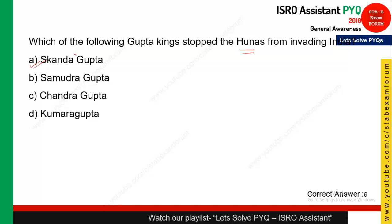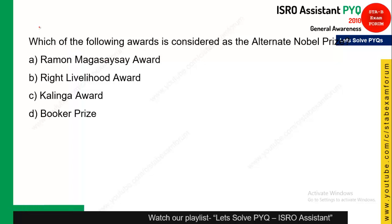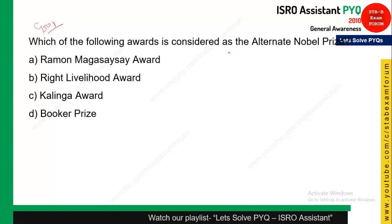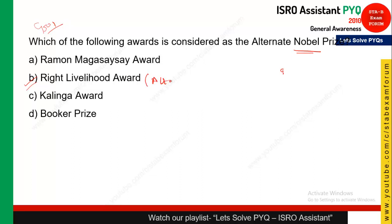Which of the following awards is considered the alternate Nobel Prize? The Nobel Prize is given to people who did tremendous work in the fields of physics, chemistry, science, economy, and humanity. But a certain award — Right Livelihood Award — gives those awards which improve the lifestyle of people. This is considered the alternate Nobel Prize.